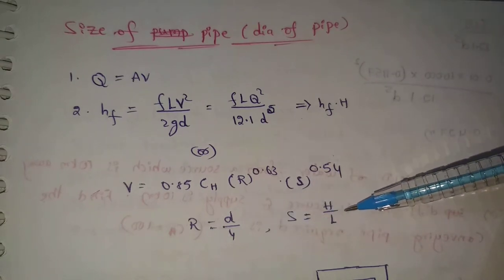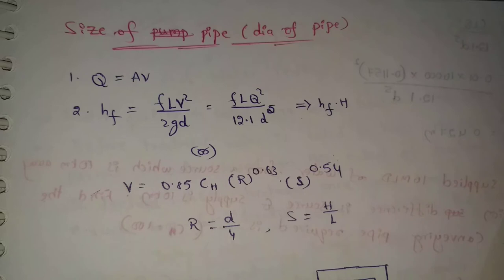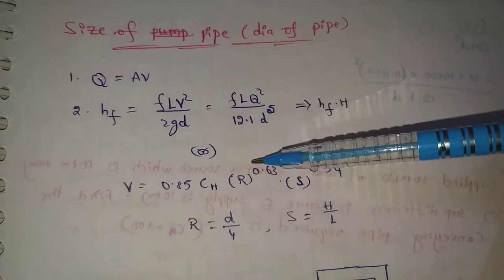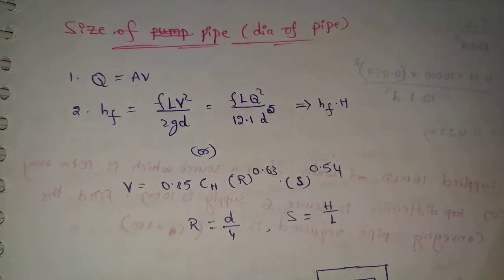Another way is using pressure gradient. Pressure equals H by L. These two formulas are very important. We use these formulas to find the pipe diameter and the pump capacity.